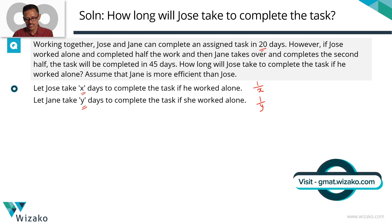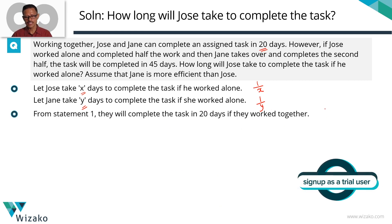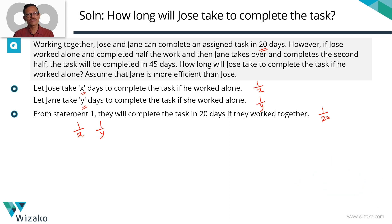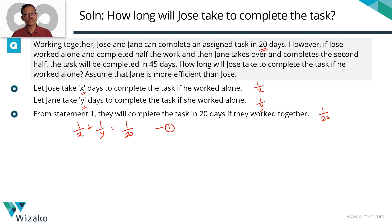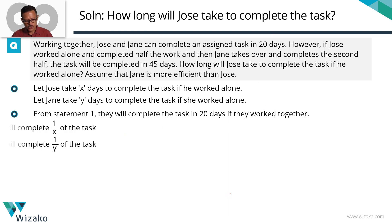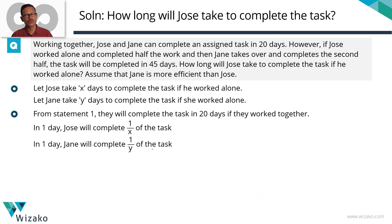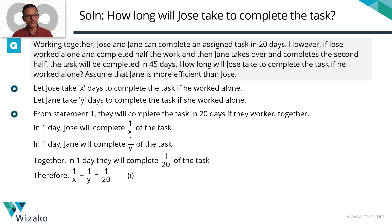The first statement tells us that if they work together, they finish the task in 20 days, meaning they finish 1/20 of the task in a day. Joe completes 1/X of the task in a day, Jane completes 1/Y of the task in a day. Together, therefore, they complete 1/X + 1/Y of the work per day, and we know that equals 1/20. So: 1/X + 1/Y = 1/20. This is Equation 1.